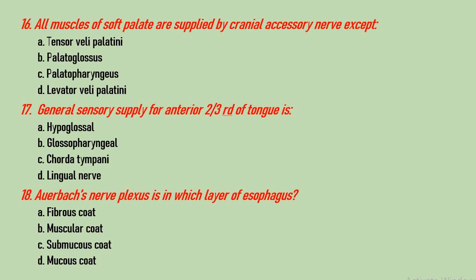Question number 16: all muscles of the soft palate are supplied by the cranial accessory nerve except which? Options are tensor veli palatini, palatoglossus, palatopharyngeus, and levator veli palatini. The correct answer is tensor veli palatini, which is straightforward. Question number 17: general sensory supply for the anterior two-thirds of the tongue is from which nerve? Options are hypoglossal, glossopharyngeal, chorda tympani, and lingual nerve. The general sensory supply is from the lingual nerve, and the special sensory supply is from chorda tympani. So D is the correct answer.